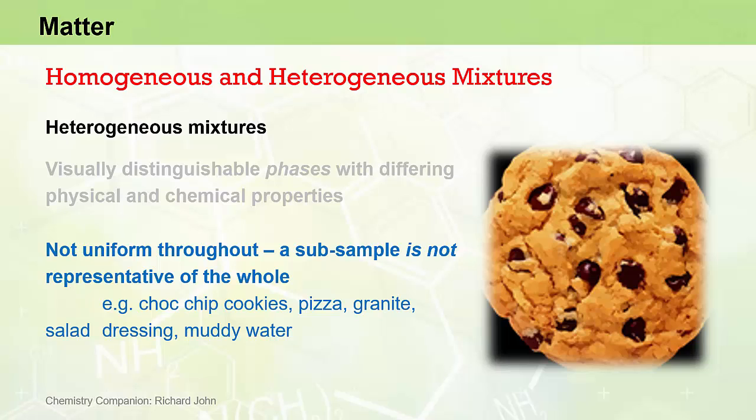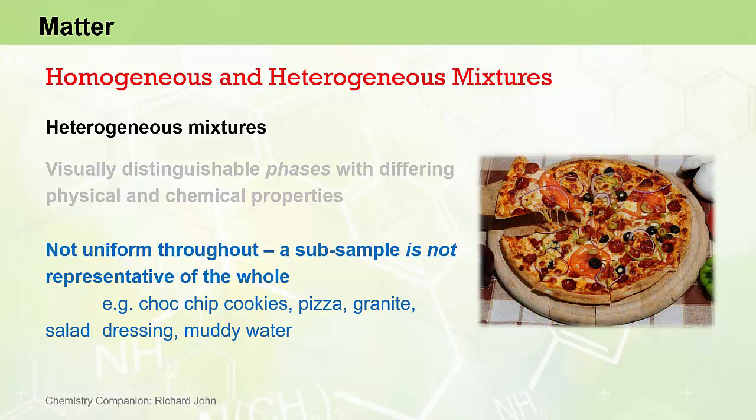Some common examples include chocolate chip cookies, where you can visually see at least two distinct phases. Pizza is another example where you can see lots of different phases or regions with vastly different chemical and physical properties.